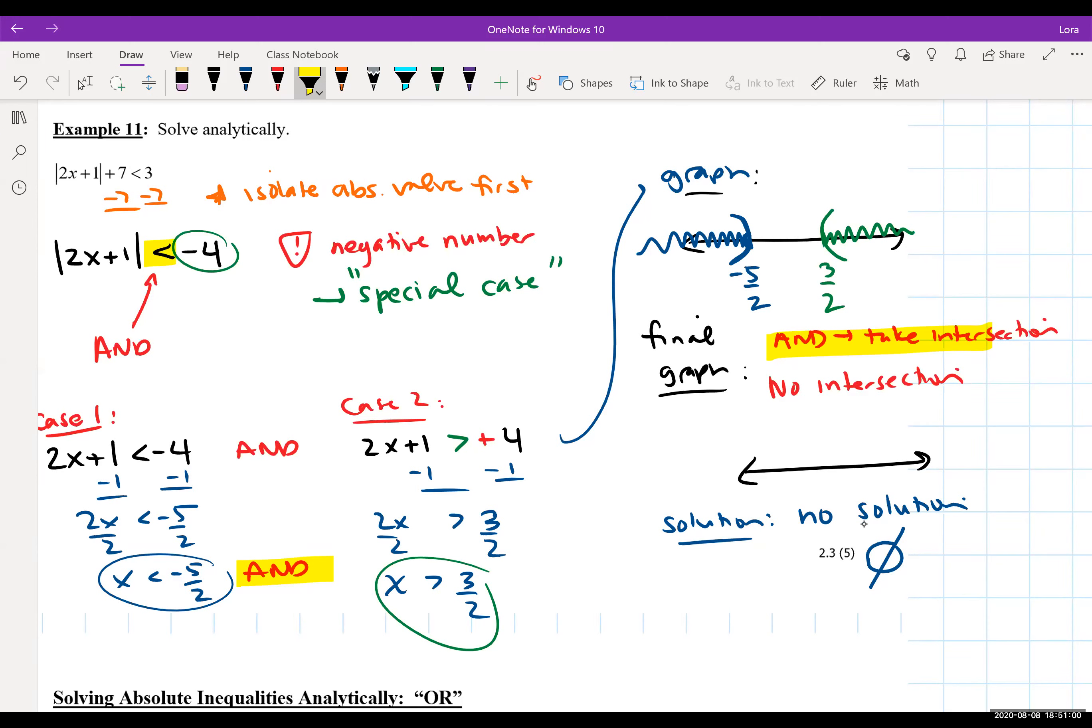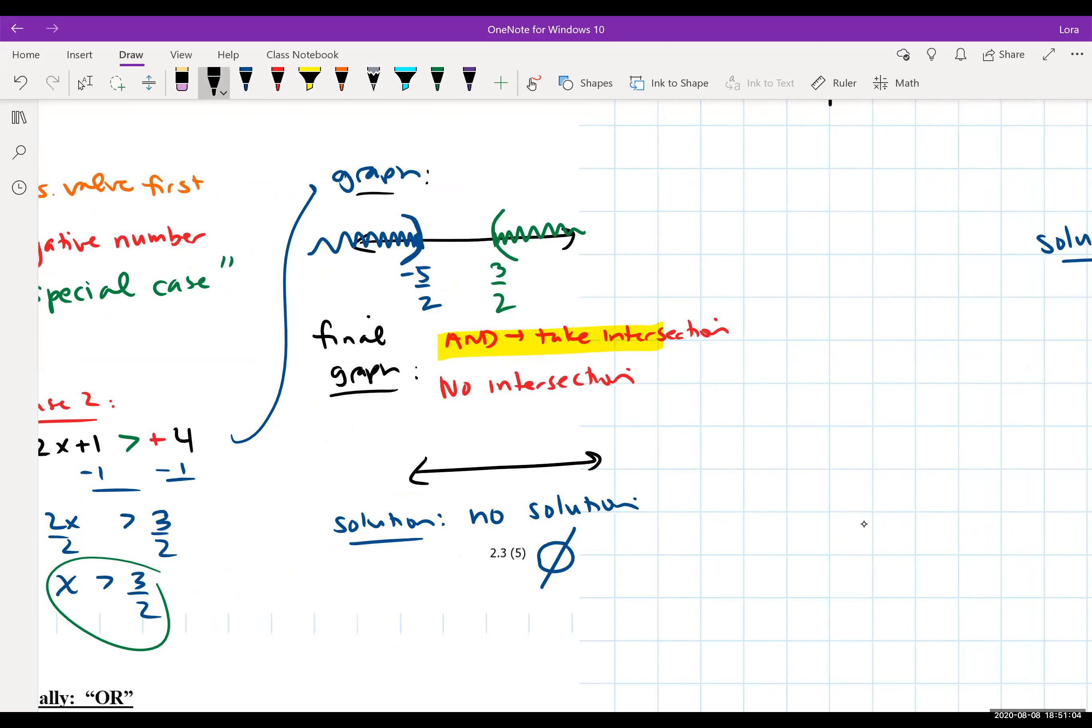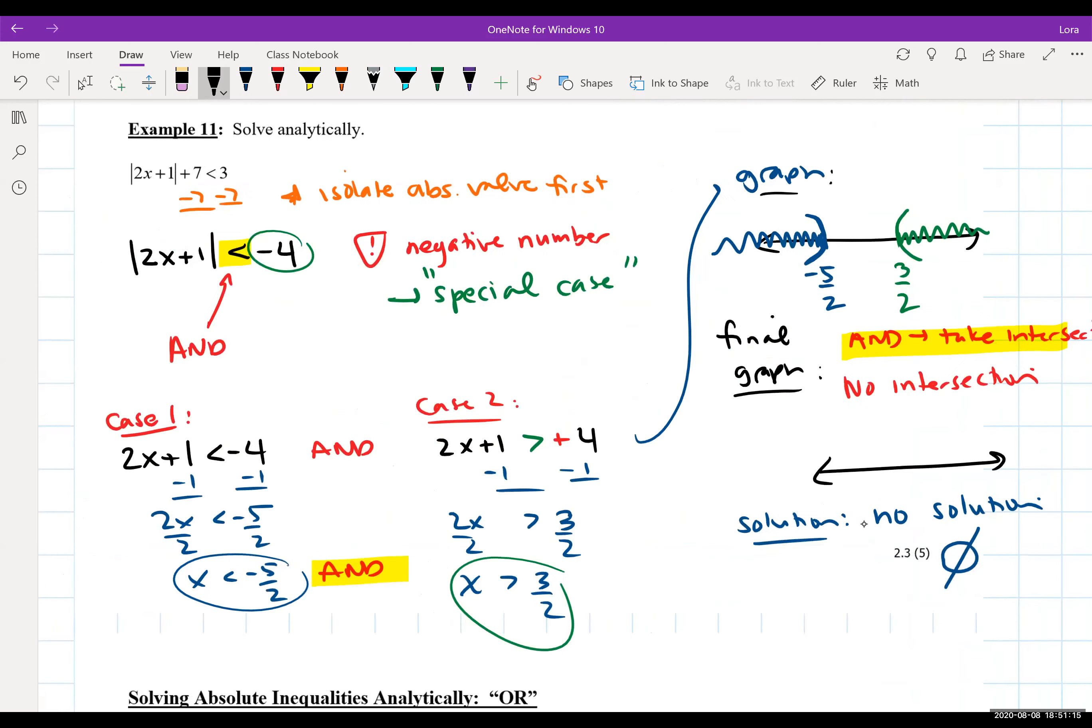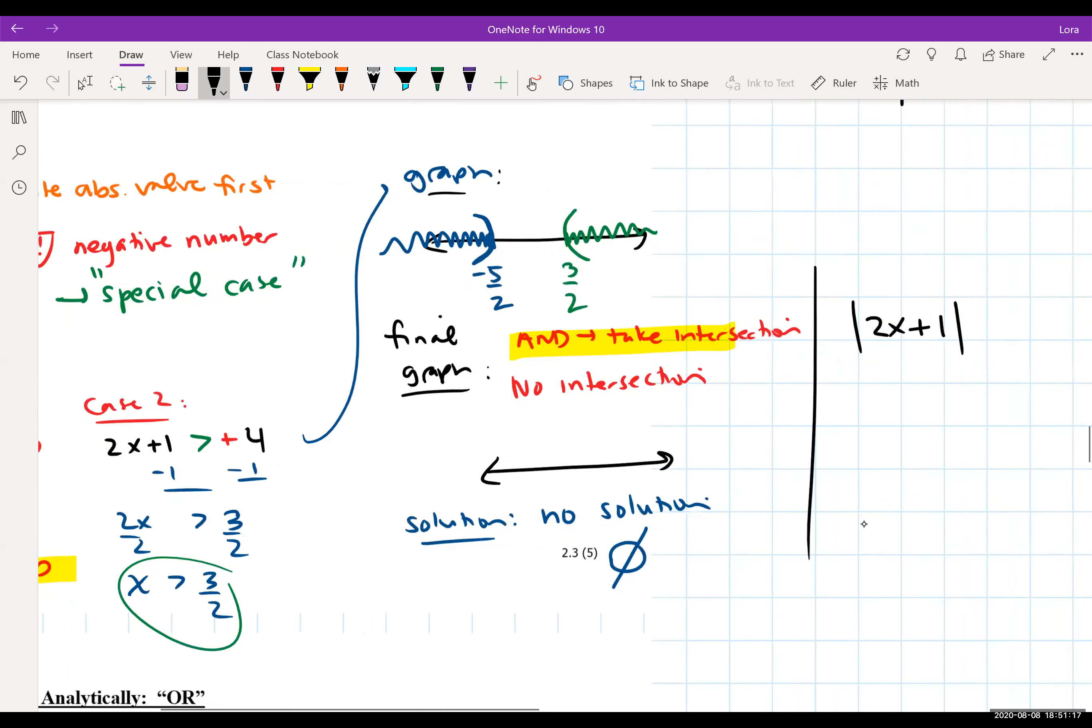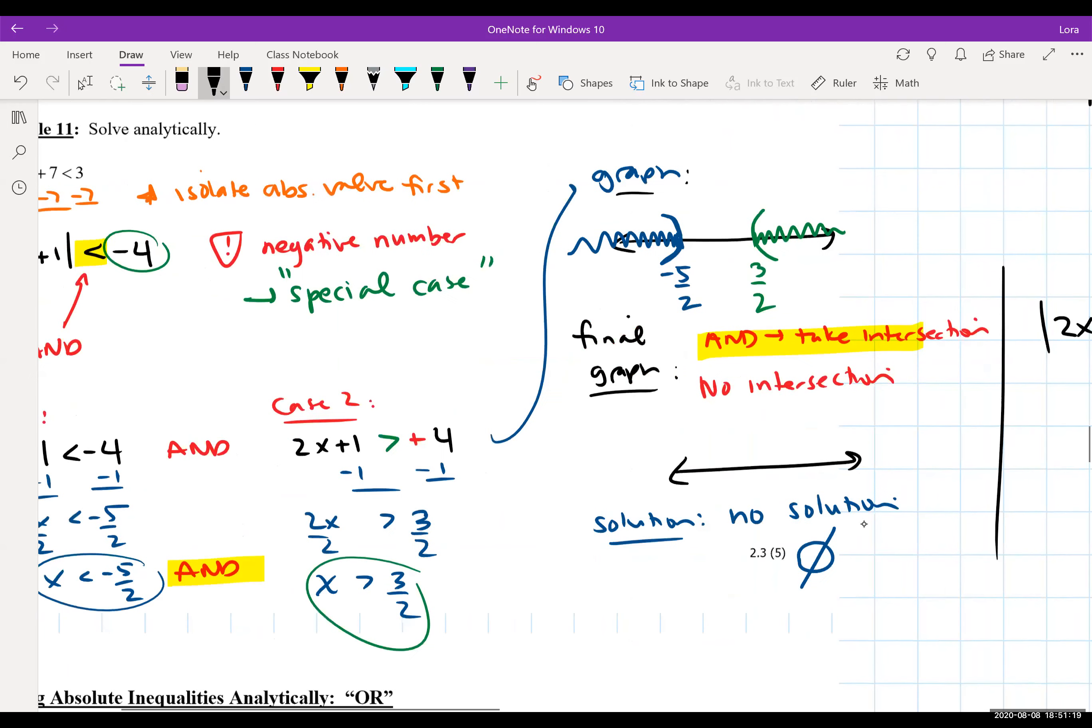Now that we kind of have that idea, let me make sure if you see the special case ahead of time, you don't always have to go through this unless they're specifically asking you why. But remember, we were looking at 2x plus one is less than negative four.